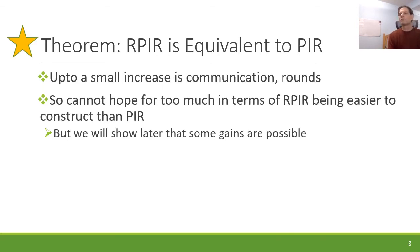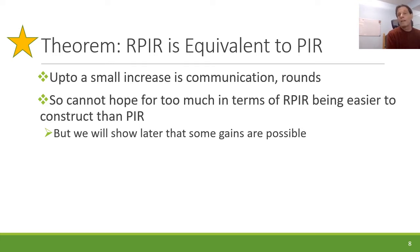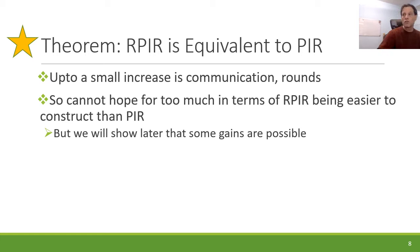The first result is a theorem that RPIR as a primitive is equivalent to PIR, up to a small increase in communication and rounds. On one hand, this means you cannot hope for too much in terms of RPIR being easier to build than PIR. But we will still show there are gains that can be made, so it is still interesting to look at.